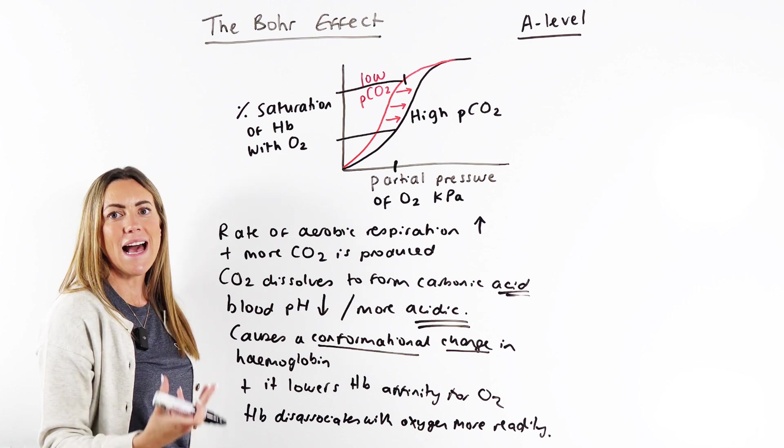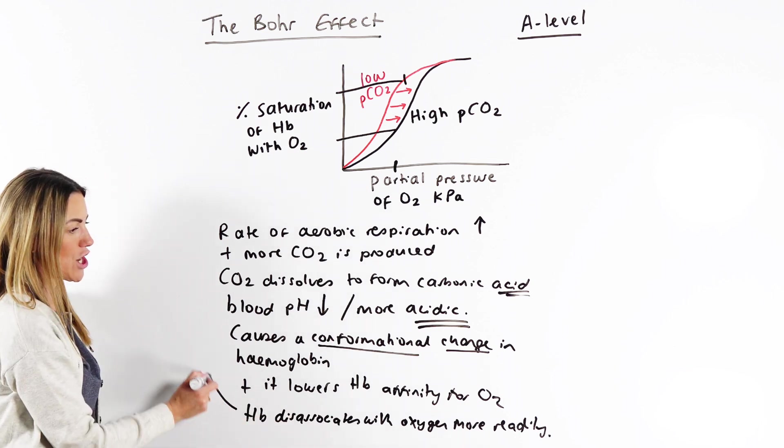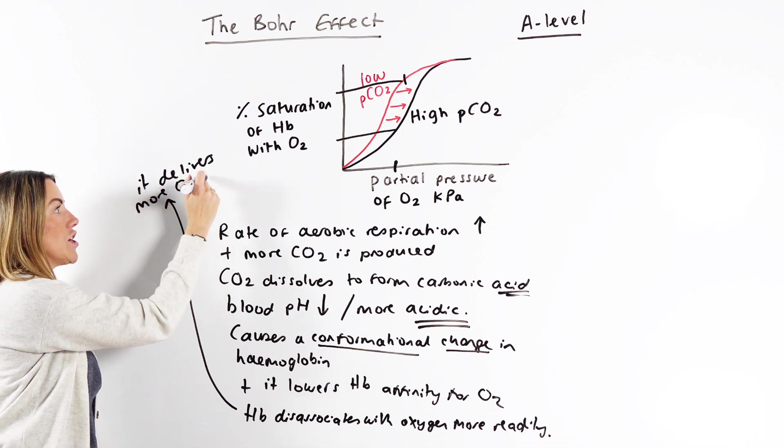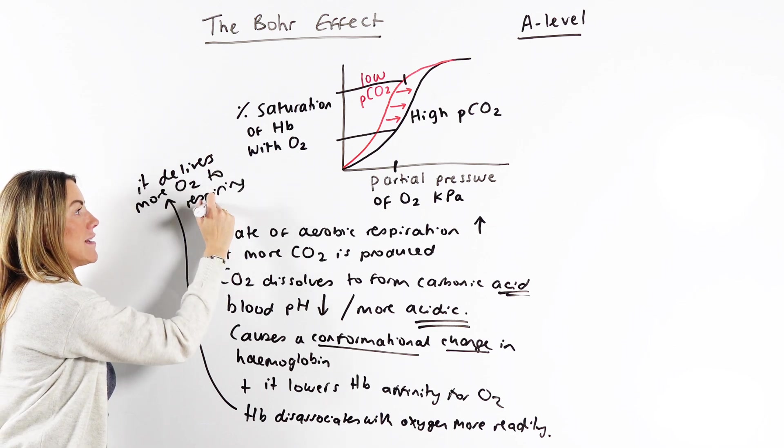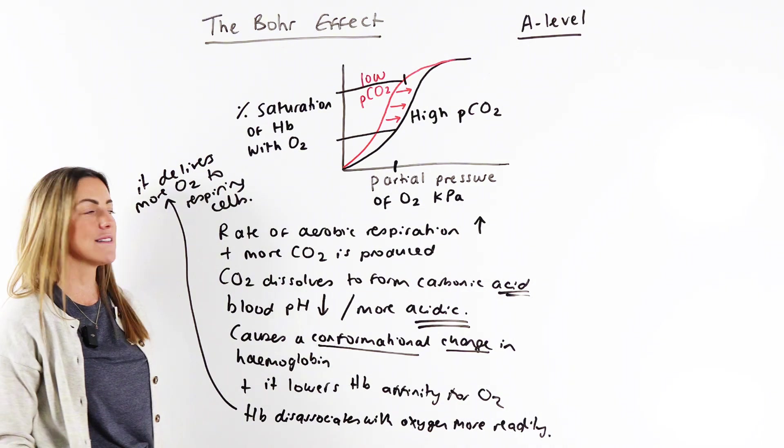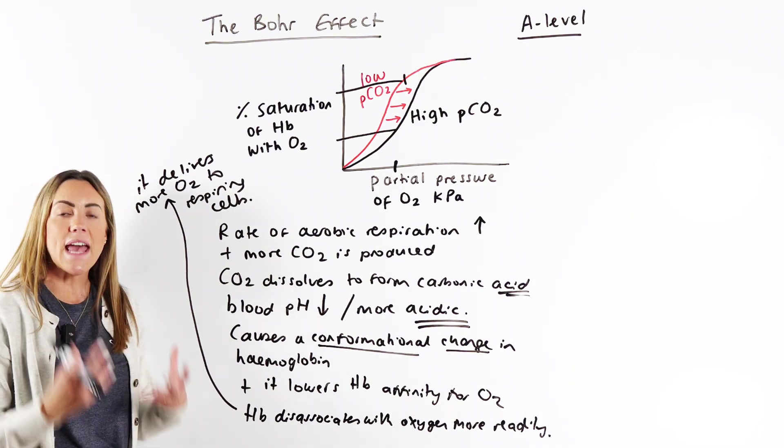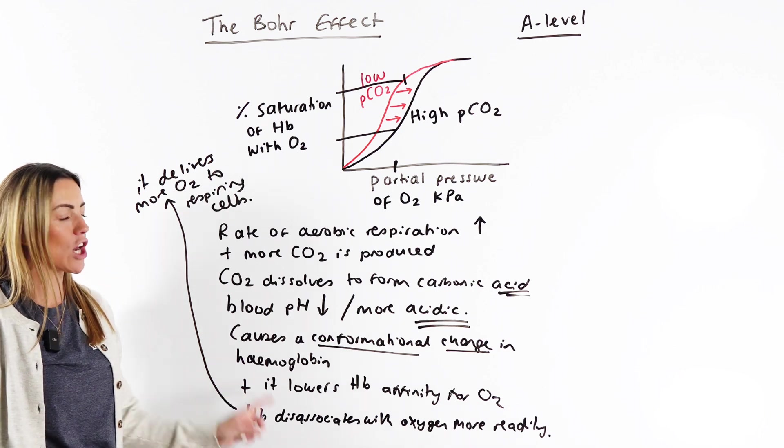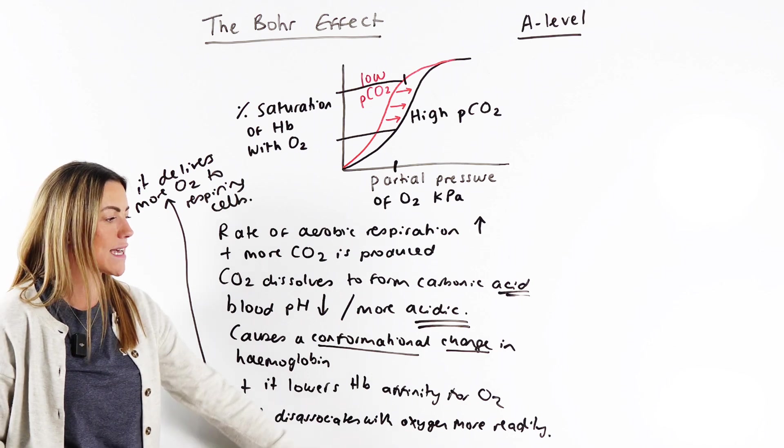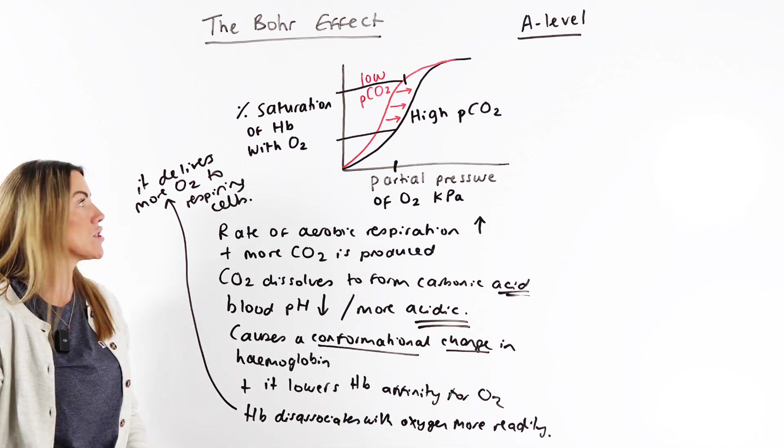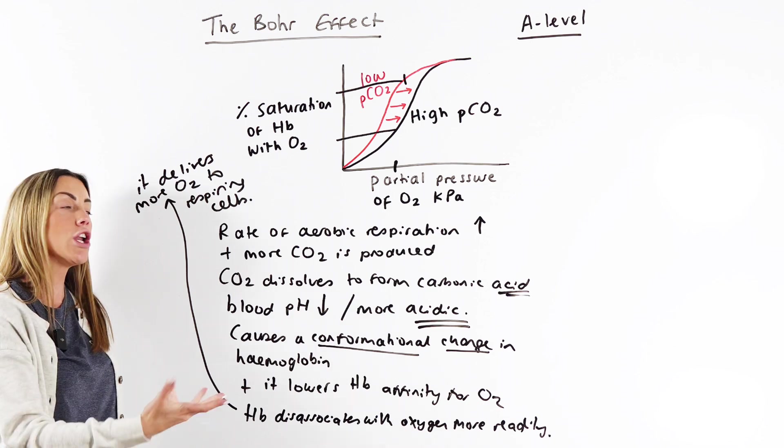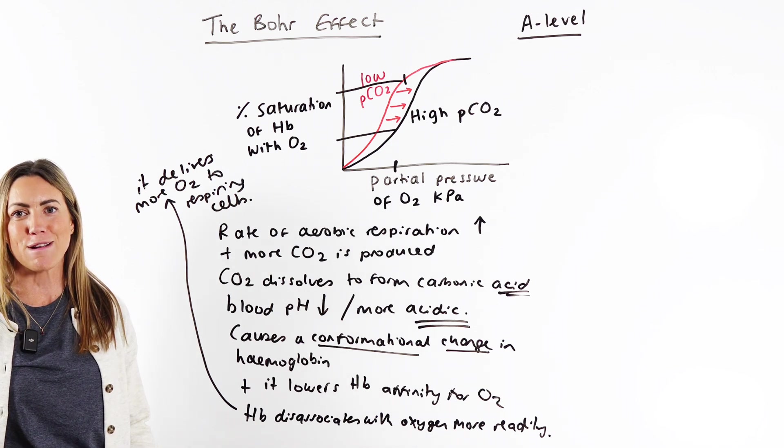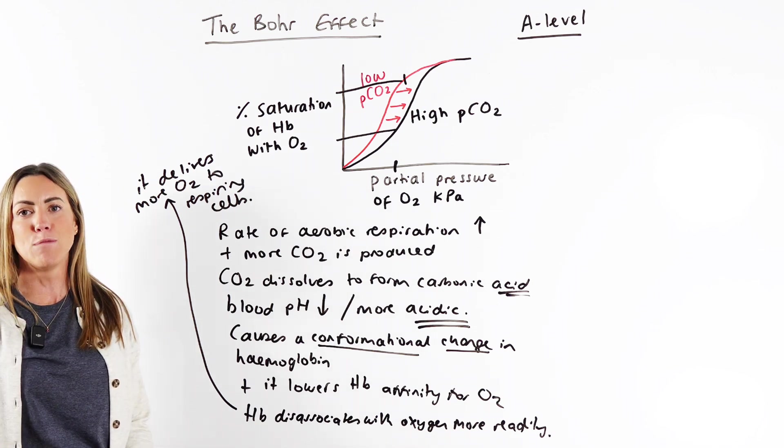And why is this an advantage? If hemoglobin dissociates with oxygen more readily, it delivers more oxygen to respiring cells, such as your muscle cells that you're using during this activity. They've got a higher rate of respiration. They have a higher demand for oxygen. And because hemoglobin's affinity has been reduced, it dissociates with oxygen more readily. This benefits our muscle cells because it means the hemoglobin is going to unload and deliver more oxygen to those cells so they can continue to do more aerobic respiration, make more ATP for muscle contraction.